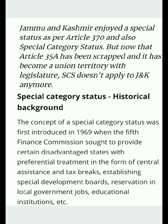Article 370 has been in the news. Jammu and Kashmir enjoyed a special status under Article 370, and also held Special Category Status (SCS). However, Article 35A — under which J&K was given the status of a Special Category State — has been scrapped, and J&K has now become a Union Territory with a legislature. So SCS does not apply to J&K anymore.